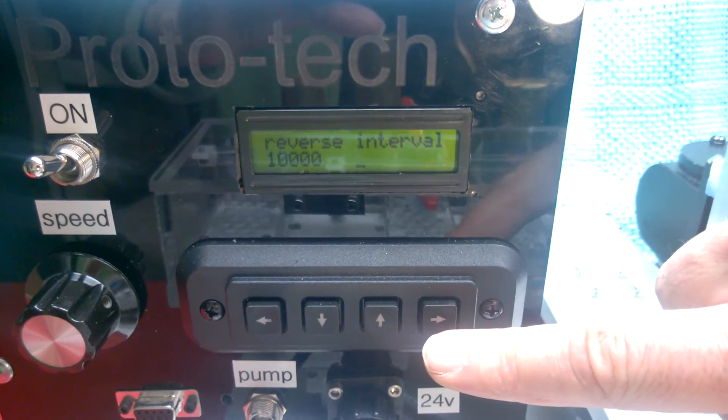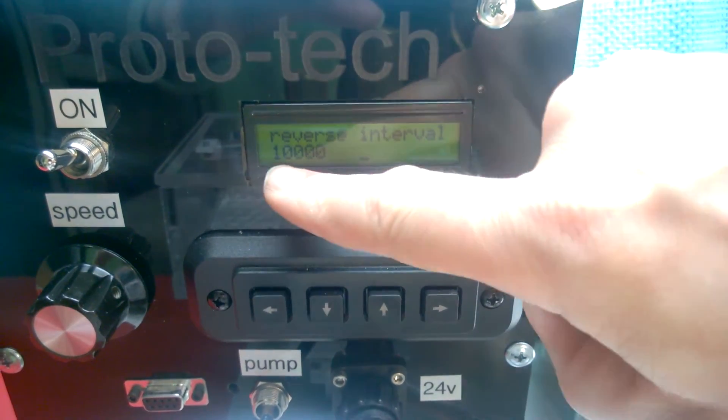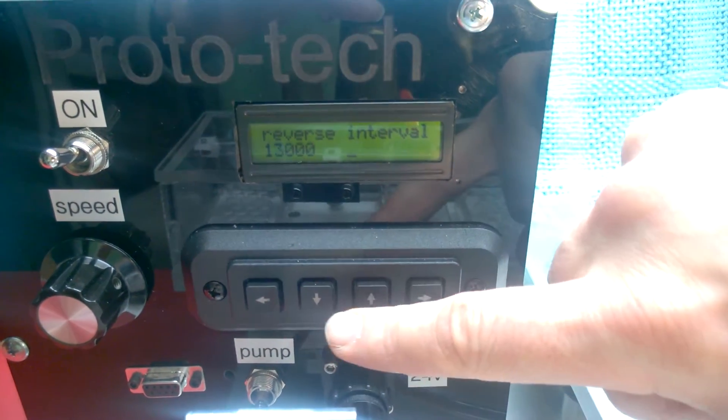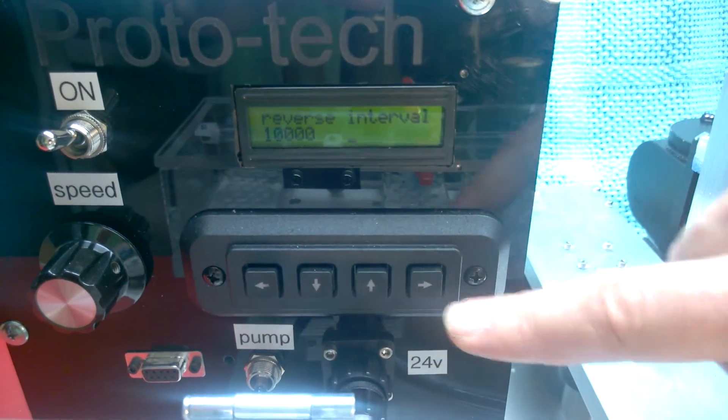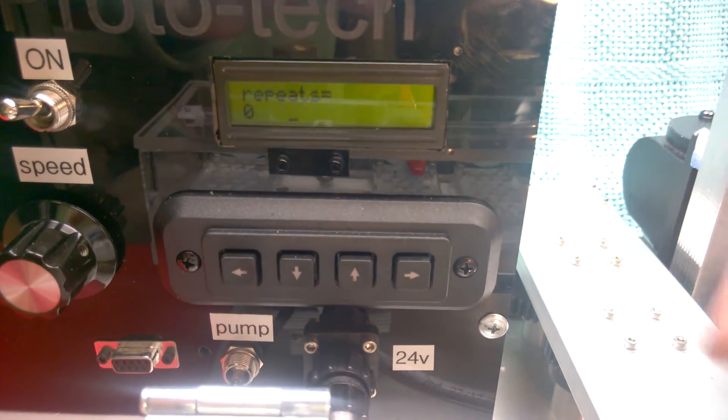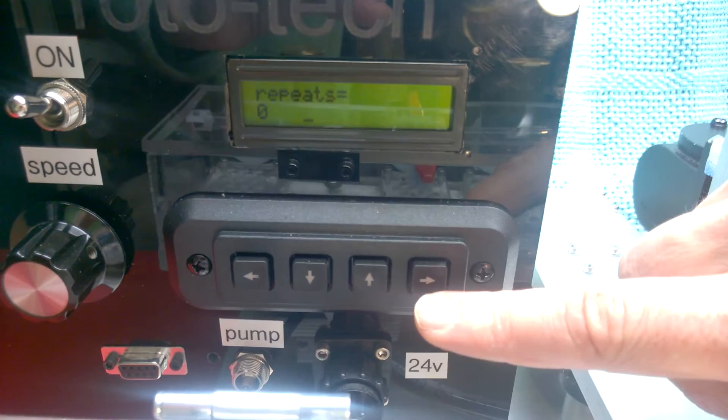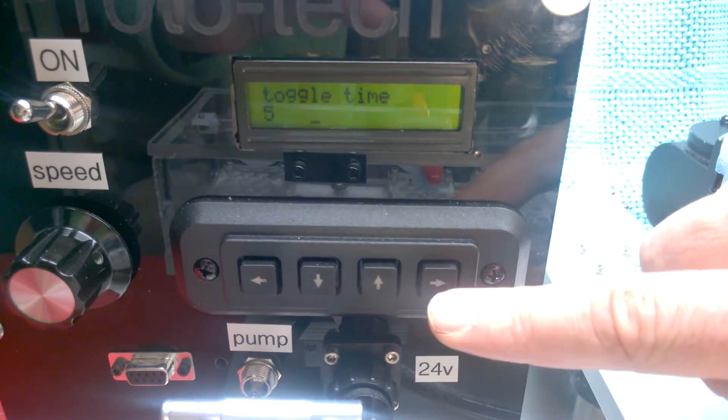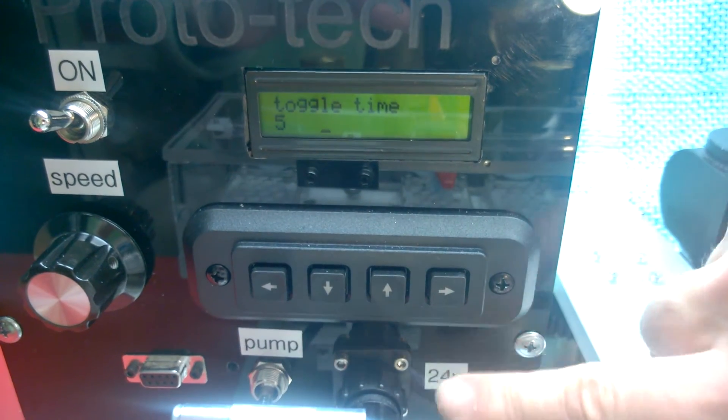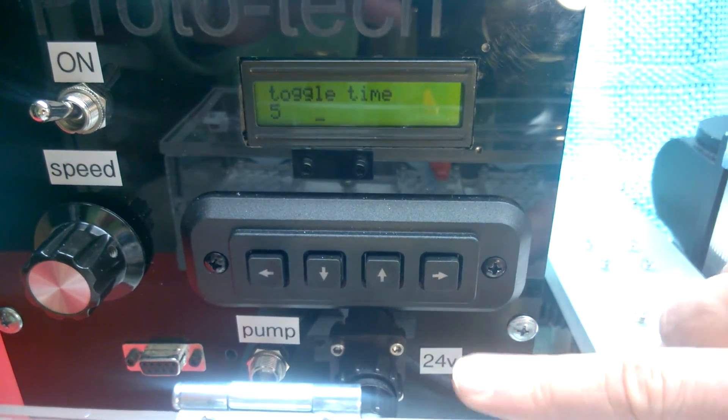And how often it changes direction. Every 10,000 cycles or 12, 11, 10, enter that. Number of repeats. That's the number of times it starts over. So you can go to very high numbers of cycles. And also, this is controlling the amount of time for this 24 volt output, which is an option.